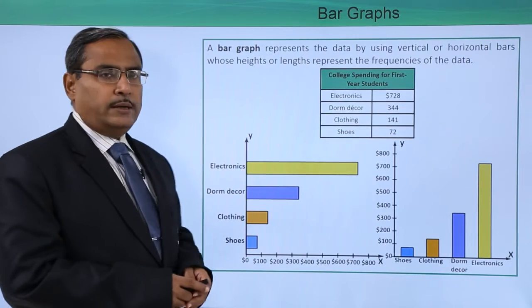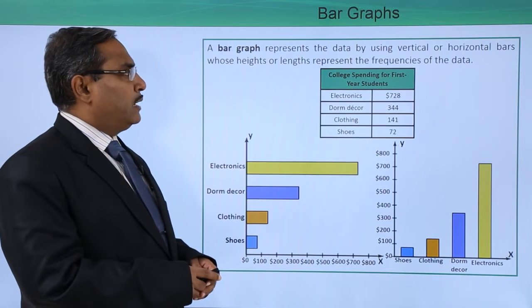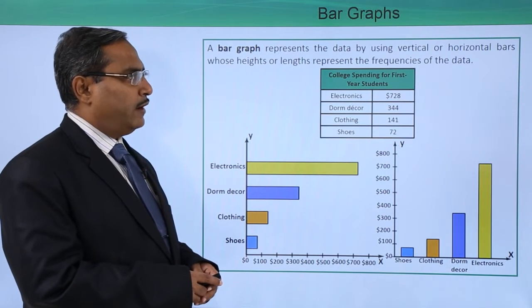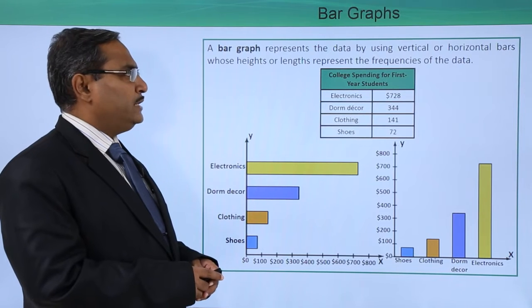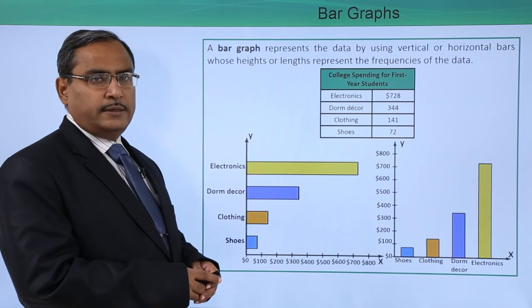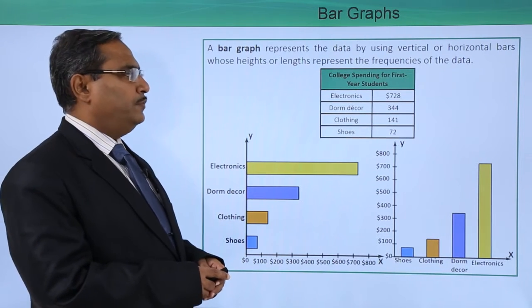First we are starting with bar graphs. A bar graph represents the data by using vertical or horizontal bars whose heights or lengths represent the respective frequencies of the data.